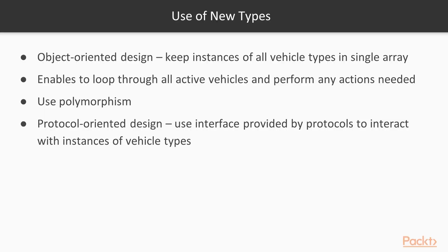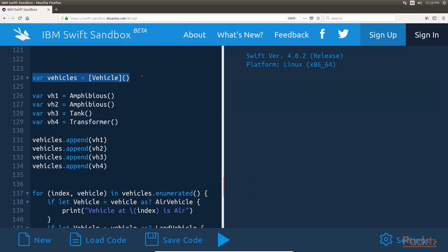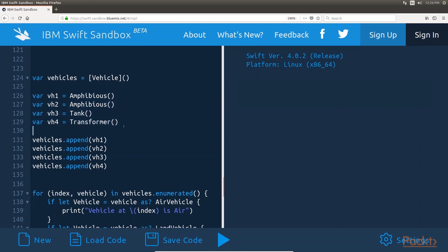Let's see how we would use these new types. As with our object-oriented design, we have the requirement to keep instances of all vehicle types in a single array, enabling us to loop through all active vehicles and perform any actions needed. For this we will use polymorphism. With the protocol-oriented design, we will use the interface provided by the protocols to interact with the instances. We created an array defined to contain instances of types that conform to the vehicle protocol, which looks exactly like the code from our object-oriented design.